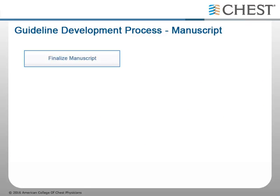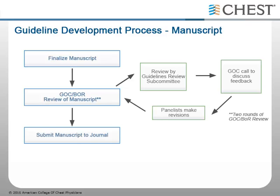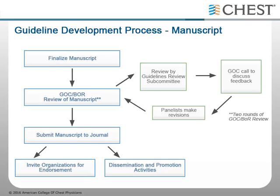The manuscript is then finalized and submitted for internal and external peer review. During the internal review process, the guideline oversight committee's review subcommittee reviews the manuscript and makes mandatory or suggested changes. Panelists then revise the manuscript and it is sent to the CHEST journal for external peer review. Once the guideline is ready for submission, organizations are invited to endorse the guideline, and once it is published, dissemination and promotional activities can then take place.